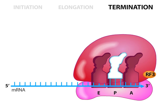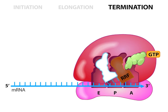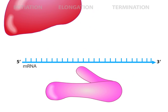Finally, another factor called ribosome recycling factor, or RRF, along with EFG, binds at the A site, and the accompanying GTP hydrolysis undocks the two ribosomal subunits. IF3 then reassociates with the 30S subunit, preventing the 50S and 30S subunits from coming together again. The liberated ribosomal subunits are now free to diffuse through the cell, ready to bind yet another mRNA and begin the translation sequence anew.